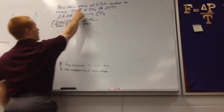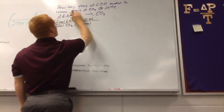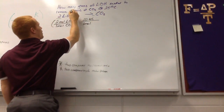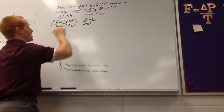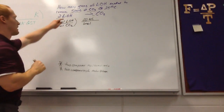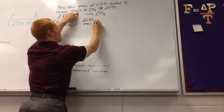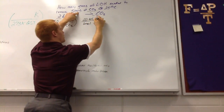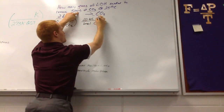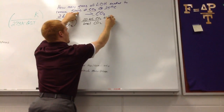We look in the problem to find what is measured in liters. It's talking about grams of lithium hydroxide, so lithium hydroxide is not in liters. You need to remove 500 liters of CO₂ — so it's CO₂ that is in liters. That gives us one mole of CO₂ per 22.4 liters of CO₂, and this is at STP.